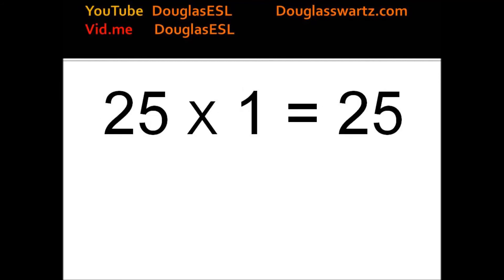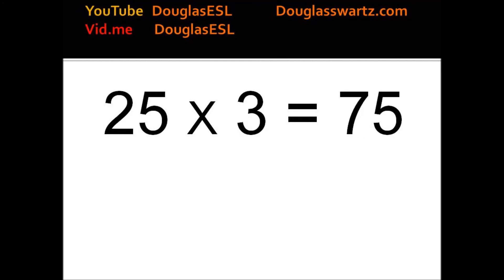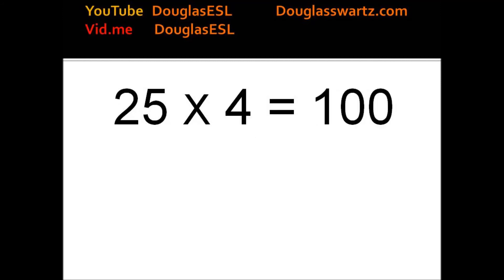25 times 1 equals 25. 25 times 2 equals 50. 25 times 3 equals 75. 25 times 4 equals 100.